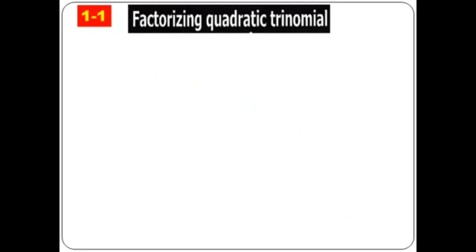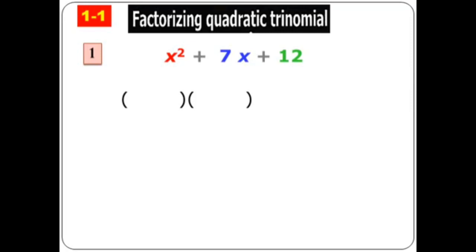So the first lesson in second prep is called: factorizing quadratic trinomials. In factorization, example one: I give you x squared plus seven x plus 12. I want to convert it back into two brackets — which two brackets multiplied together give me this expression? First, I take x squared and distribute it — it becomes x and x. I put x in the first bracket and x in the second bracket.